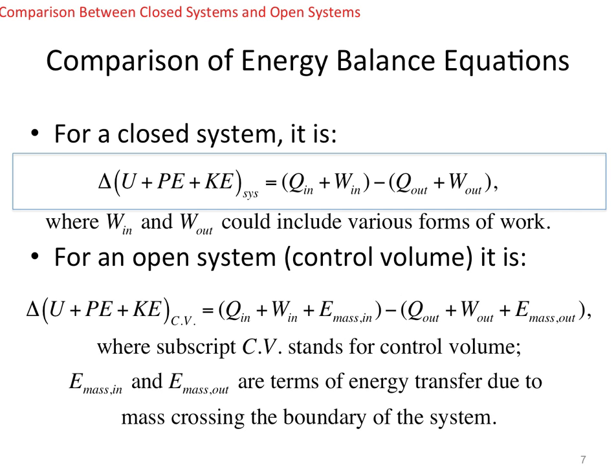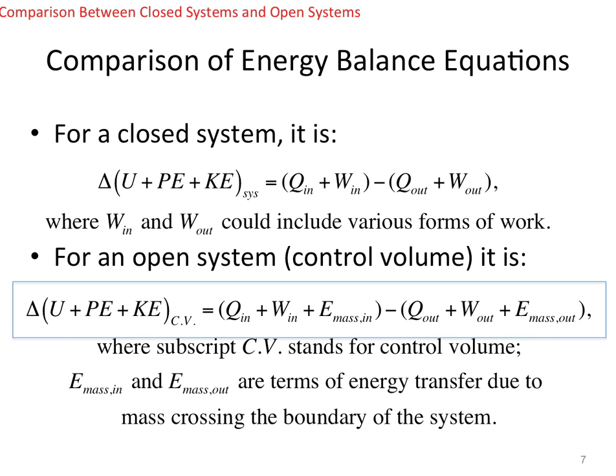For an open system, it is still the energy change of the system. The energy change of the control volume — internal energy, potential energy, and kinetic energy combined — is equal to q_in, w_in plus E_mass_in, minus q_out, w_out, and E_mass_out. The subscript CV stands for control volume. The key difference comparing the two equations is that for the control volume we have an E_mass term.